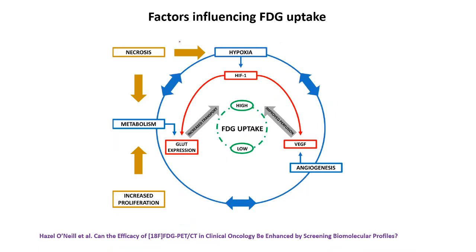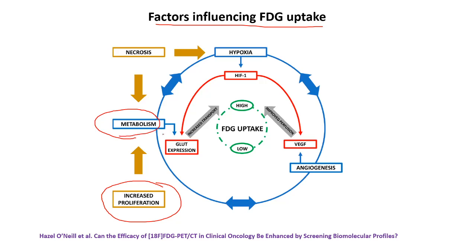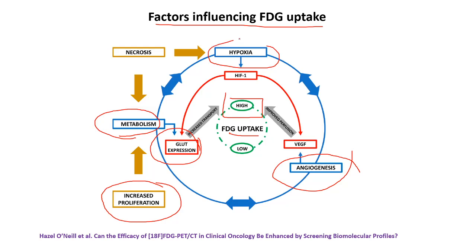Factors that influence FDG uptake include increased proliferation, which leads to increased metabolism and higher glucose demand, resulting in overexpression of GLUT receptors and increased FDG uptake. For angiogenesis, cancer cells secrete growth factors such as VEGF, leading to increased perfusion and improved FDG uptake. Hypoxic cancer cells secrete hypoxia-inducible factor 1 (HIF-1), which activates GLUT and VEGF expression, further increasing FDG uptake. Thus, metabolism, hypoxia, and angiogenesis all influence elevated FDG uptake.